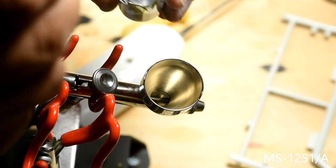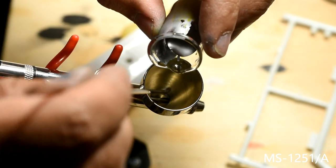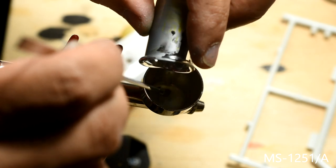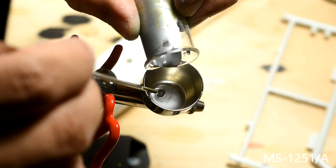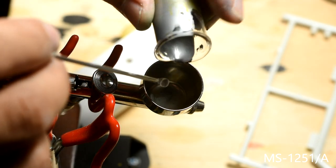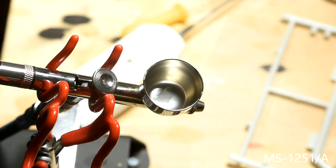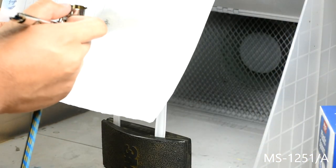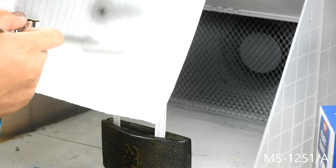I start by thinning Model Master's Chrome Silver with one part paint and one part Model Master's airbrush thinner. I will be using my Patriot 105 airbrush set at 20 psi. I like to do a couple of test sprays on a piece of paper to get the feel for the paint coming out of the airbrush.